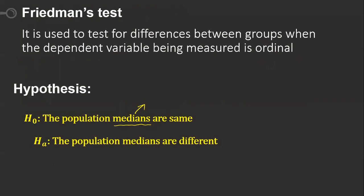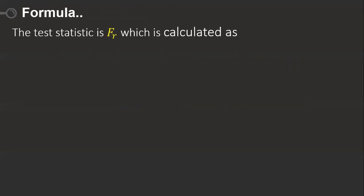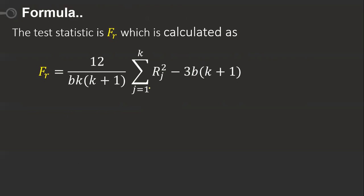The alternative hypothesis is that the population medians are different. The test statistic is called FR. It is calculated by: 12 divided by B·K·(K+1), multiplied by sigma of RJ squared from j=1 to K, minus 3B(K+1). Sometimes the summation index is written as i=1 to P or M — it's just a notation difference.